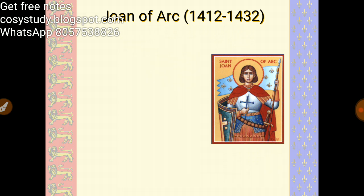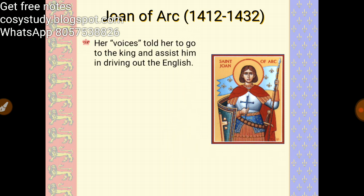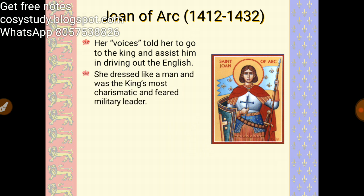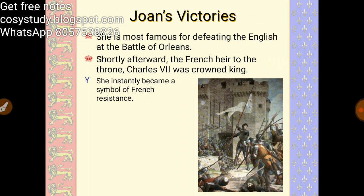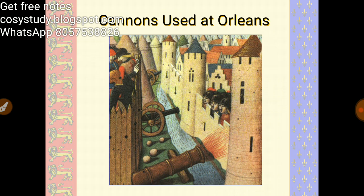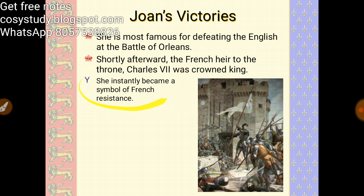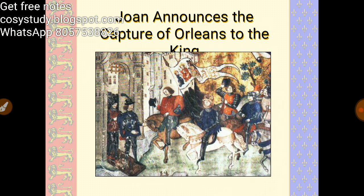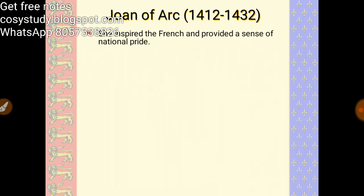Now we talk about Joan of Arc. Her voices told her to go to the king and assist him in driving out the English. She dressed like a man and became the most charismatic and feared military leader. She is most famous for defeating the English at the Battle of Orleans. Shortly afterward, the French heir to the throne, Charles VII, was crowned as king. She instantly became a symbol of French resistance.